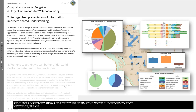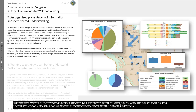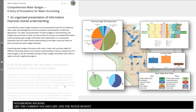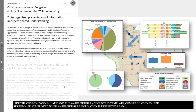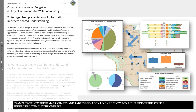We believe water budget information should be presented with charts, maps, and summary tables to improve understanding and sharing of water budget components with agencies within a region as well as in neighboring regions. Like the common vocabulary and the water budget accounting template, communication can be significantly improved when water budget information is presented in an organized way with charts, maps, and tables. The examples shown on screen are ones developed and used as part of the Tulare Lake and Central Coast Hydrologic Region water budget pilot projects, which were precursors of the water budget handbook.